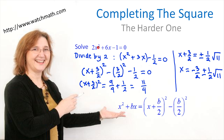Let me repeat the idea. The idea is to divide by the coefficient of x squared, because we want to make the coefficient of x squared equal to 1. Once we have the coefficient of x squared equal to 1, we can apply the previous method, which is replacing x squared plus bx by a difference of two squares.